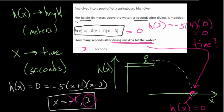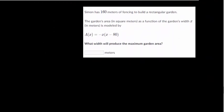Let's do one final question. In this one, Simon has 160 meters of fencing to build a rectangular garden. The garden's area in square meters as a function of the garden's width in meters is modeled by this equation. What width will produce the maximum garden area?